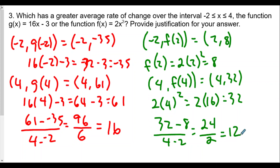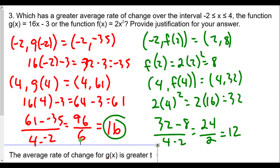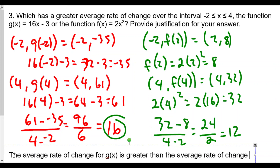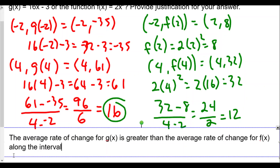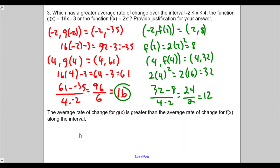So which has the greater average rate of change? The average rate of change for g(x) is greater than the average rate of change for f(x) along this interval, because 16 is greater than 12. Note that if we changed the interval, we might get a different result.